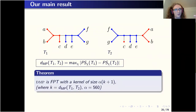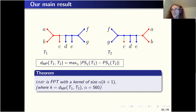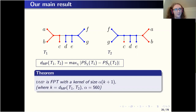To cut to the end: the main result of our paper is that the problem of calculating the maximum parsimony distance for any two trees is fixed parameter tractable, and it has a linear-size kernel. The size of the kernel is linear, which is good, though the constant factor involved is 560 — this can probably be reduced, but that's what we have so far. I will formally define fixed parameter tractability and kernel size in a few slides, but this is the main takeaway result.